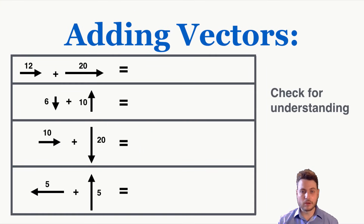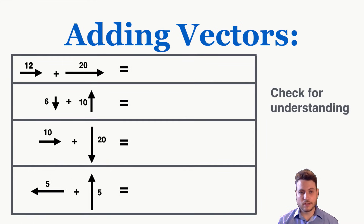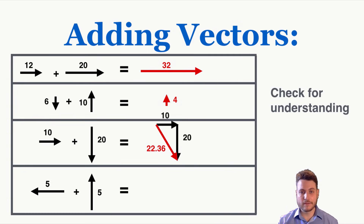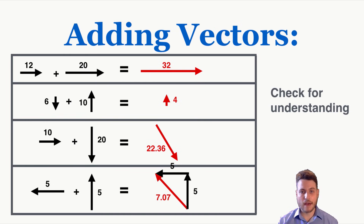Let's do a quick check for understanding — you might want to pause the video and determine the size of each vector sum. For the first two: 12 and 20 are working together, so the overall vector is 32 to the right. For the second pair: they work against each other, giving a final vector of 4 pointing up. The next set forms a right triangle, so using the Pythagorean theorem gives 22.36. Finally, the last pair also uses the Pythagorean theorem to give 7.07.